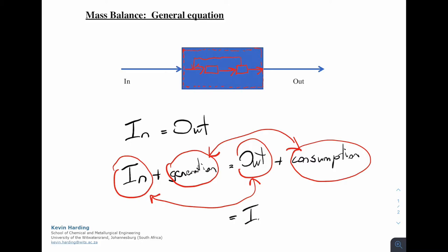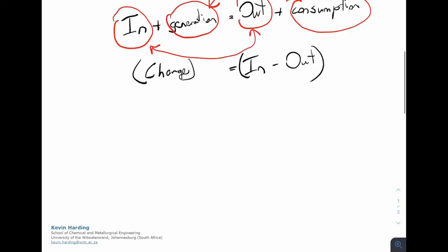In is moving to the right-hand side and I'm leaving as a positive, so it will be in minus out. That's the flow terms, that's what's coming in and out. The generation term and the consumption term, I'm just going to call change. So we now have change is equal to in minus out. That change is a change because it is not at steady state.